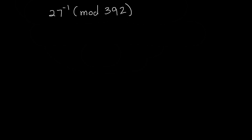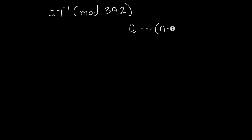Hey everybody, this is Paul. In this video I'm going to do an example of how we can find the inverse of some number mod some other number. All of the numbers that we deal with in mod 392 are going to be integers from 0 all the way up to 391. You're basically dealing with a set of numbers from 0 all the way up to whatever your modulus is, which we'll call n minus 1.